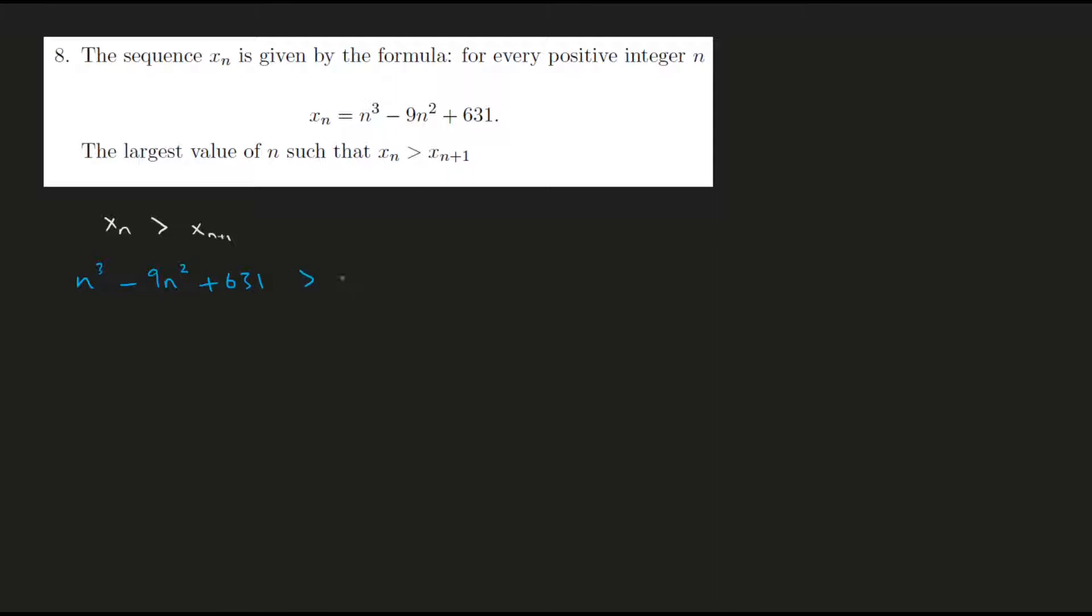And x of n plus 1 would be given by n plus 1 cubed minus 9 times n plus 1 whole square plus 631. Our job is just to simplify this inequality and get to the answer. So 631 would directly cancel out from both sides and I'm going to take everything to the left hand side.